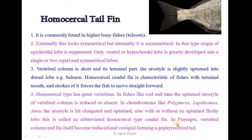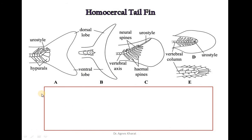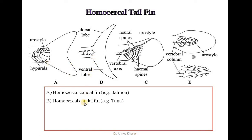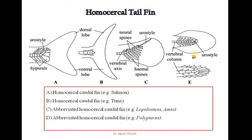In fish like Phyrepsis, the vertebral column and fin itself become reduced and vestigial. So these are the five types of homocercal tail fin. Diagram A shows the homocercal caudal fin found in salmon fish. Diagram B represents the homocercal caudal fin found in tuna. Diagram C represents the abbreviated homocercal caudal fin found in Lepisosteus and Amia. Diagram D shows the abbreviated homocercal caudal fin found in Polypterus, and Diagram E shows the gephyrocercal caudal fin found in Phyrepsis.